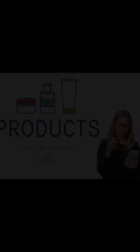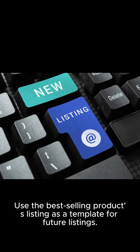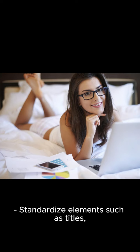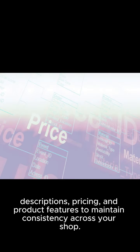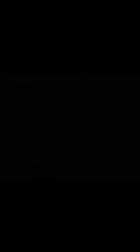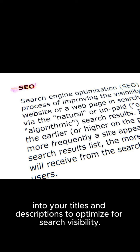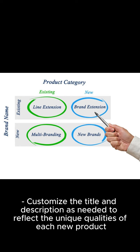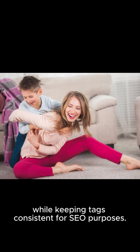Step 5: Create a product listing template. Use the best-selling product's listing as a template for future listings. Standardize elements such as titles, descriptions, pricing, and product features to maintain consistency across your shop. Incorporate high-performing keywords into your titles and descriptions to optimize for search visibility. Customize the title and description as needed to reflect the unique qualities of each new product, while keeping tags consistent for SEO purposes.